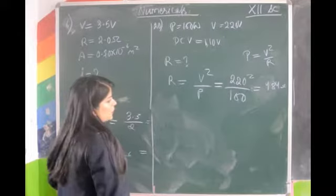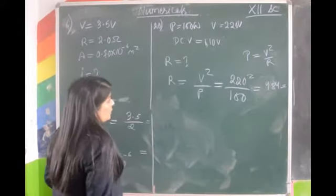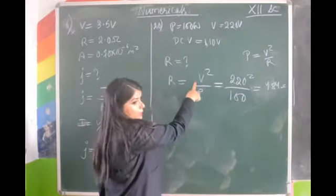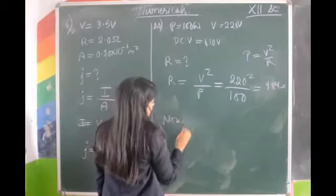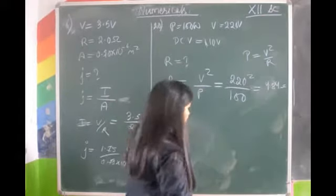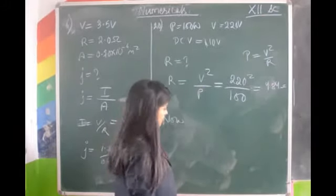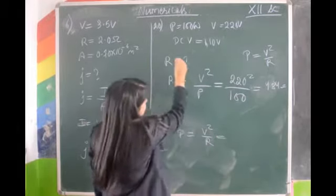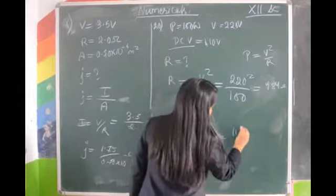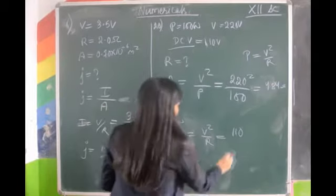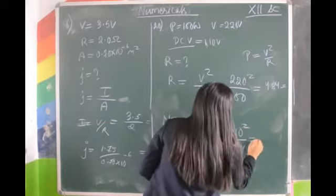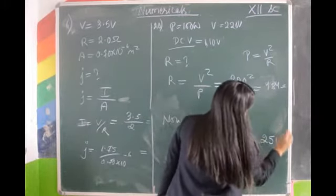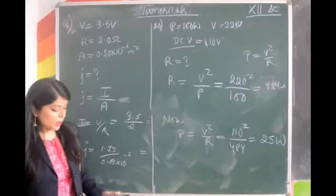Now after finding the resistance of 484 ohm, we can find the new power using the same relation P = V² / R. But now the voltage is different — it is 110V and resistance is 484 ohm. After doing the calculation, what we get is 25 watts. This is question number 20.